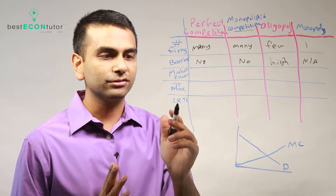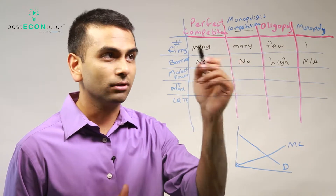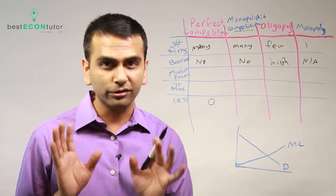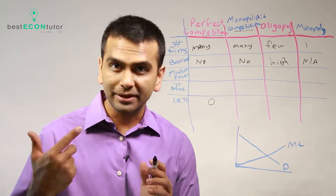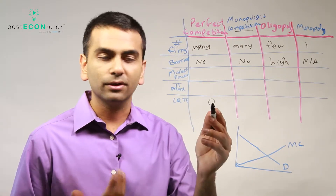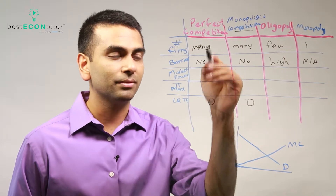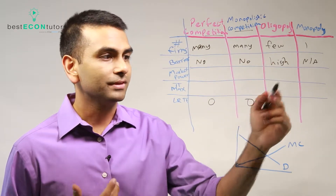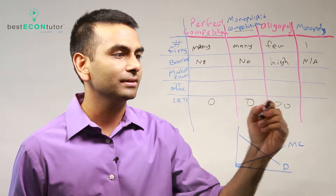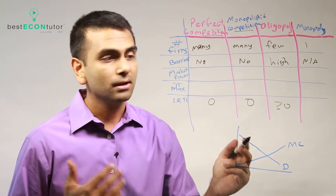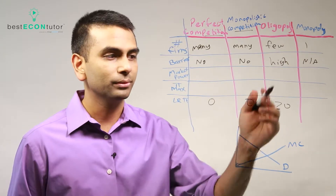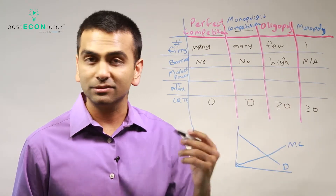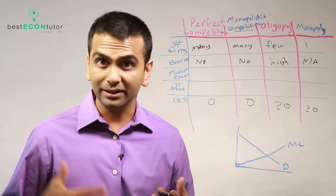This also tells us about long-run profit. With many firms and no barriers to entry in perfect competition, long-run profits are zero — if you're making a profit, someone else will enter and compete until profits reach zero. Same with monopolistic competition. For oligopolies and monopolies, long-run profits can be positive, since no one is necessarily going to enter and price-compete with you.